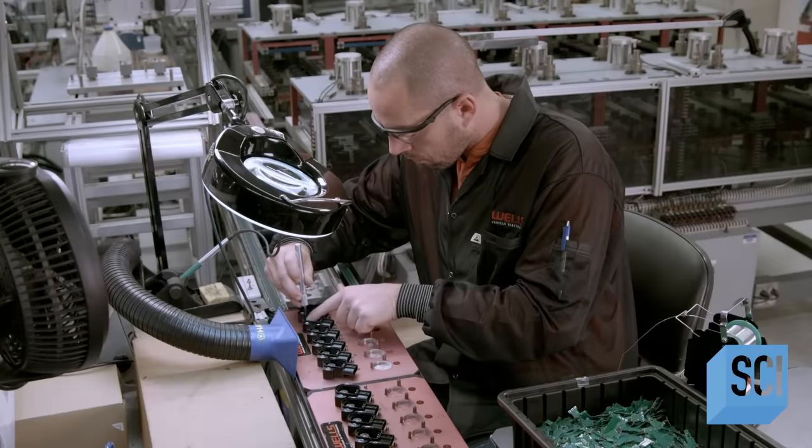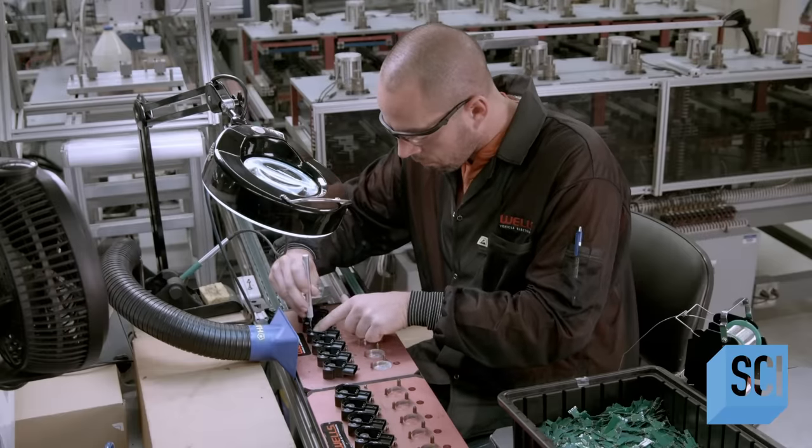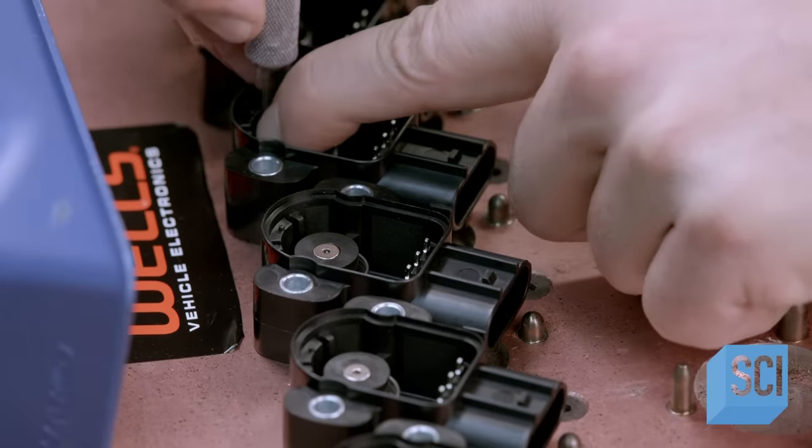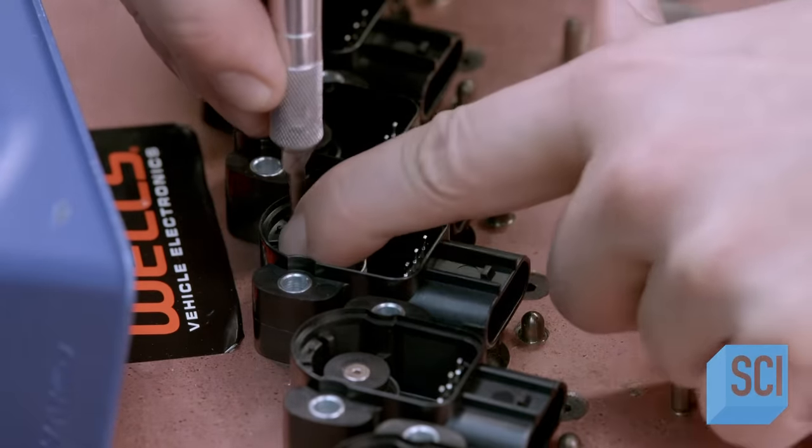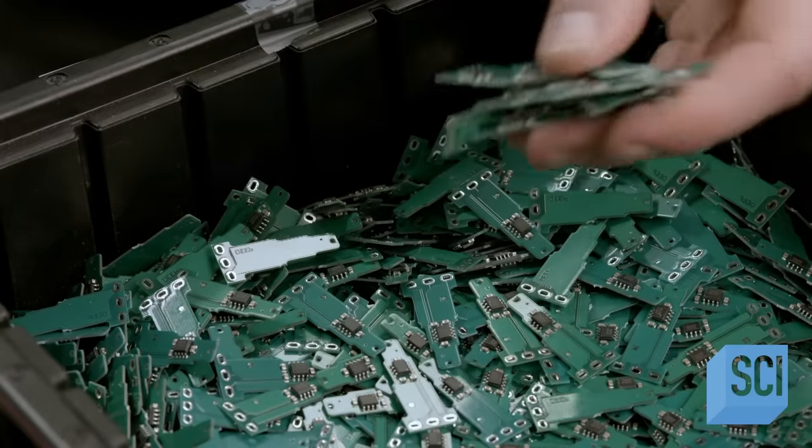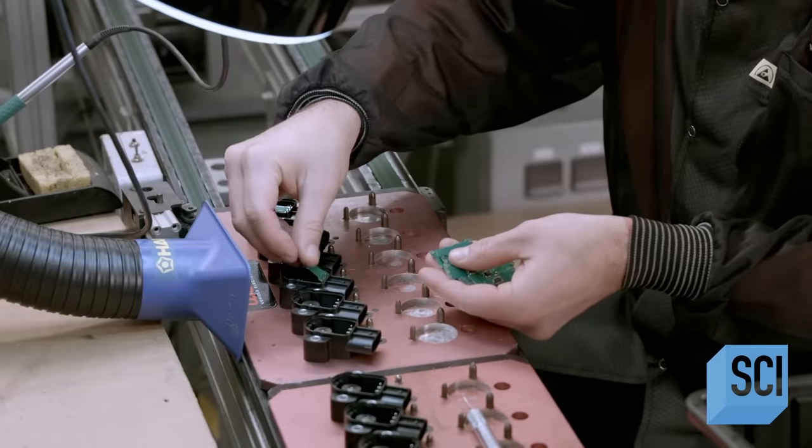A worker installs a torsion spring in the housing. It will hold the magnet holder tight to the throttle body. He now inserts the printed circuit boards into the sensor housings.